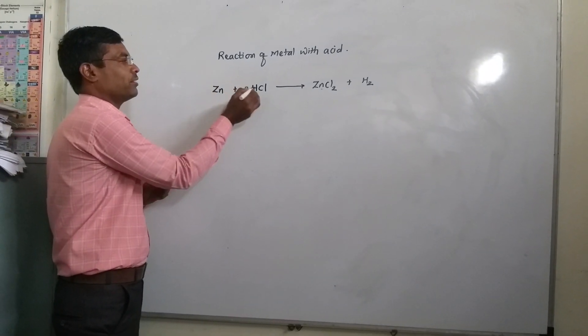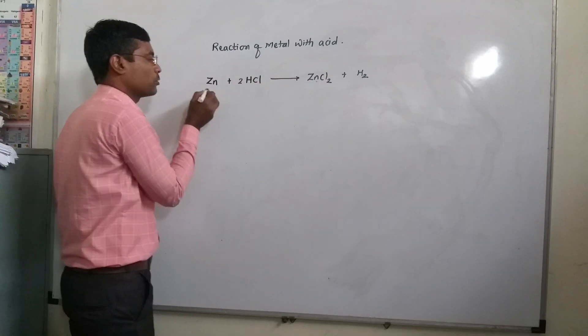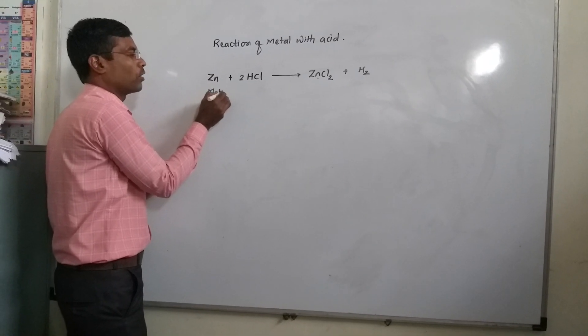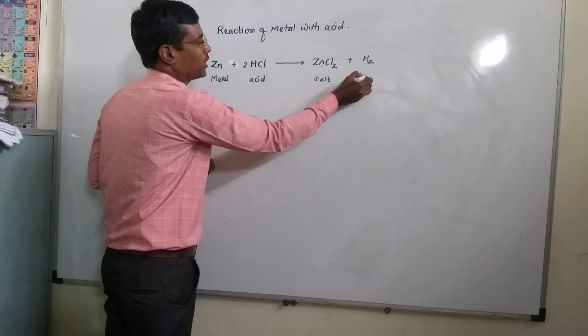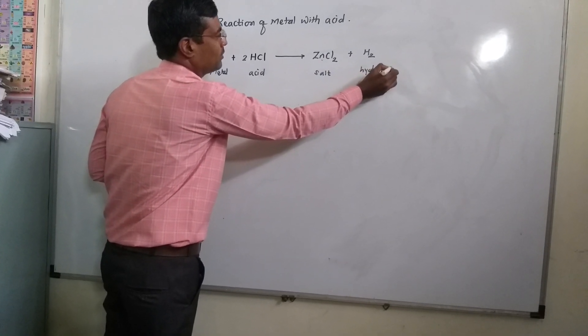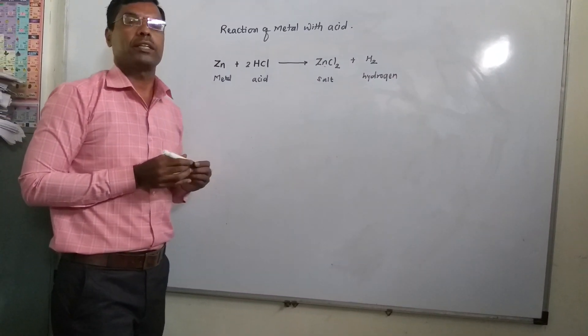So the metal reacts with acid and forms a salt, and hydrogen gas is evolved. This is the chemical reaction between metal and acid.